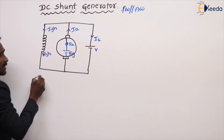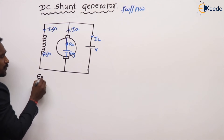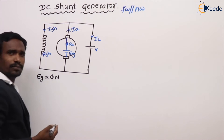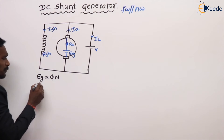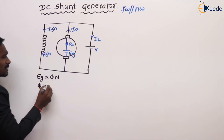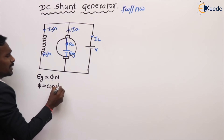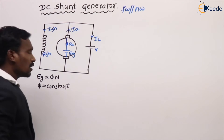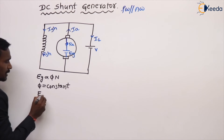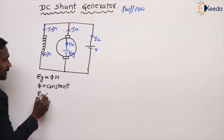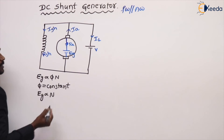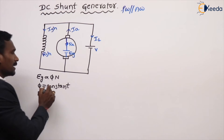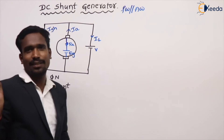In this condition, EMF is directly proportional to flux times speed (φ × N). Here the flux is constant irrespective of the load. So the generated EMF is directly proportional to speed. This is fixed — same as a separately excited generator.